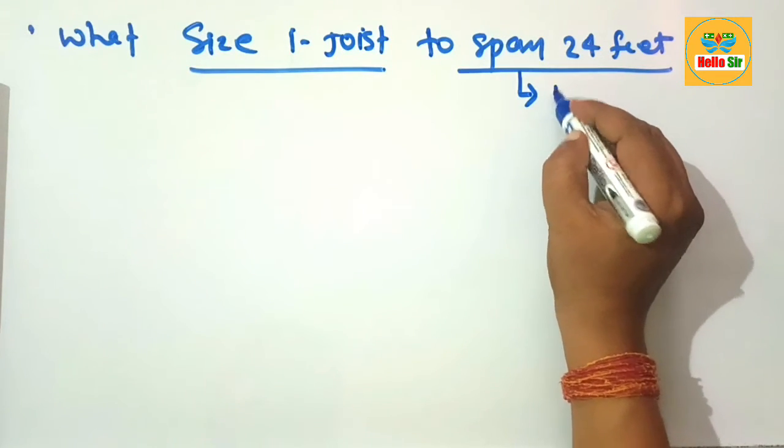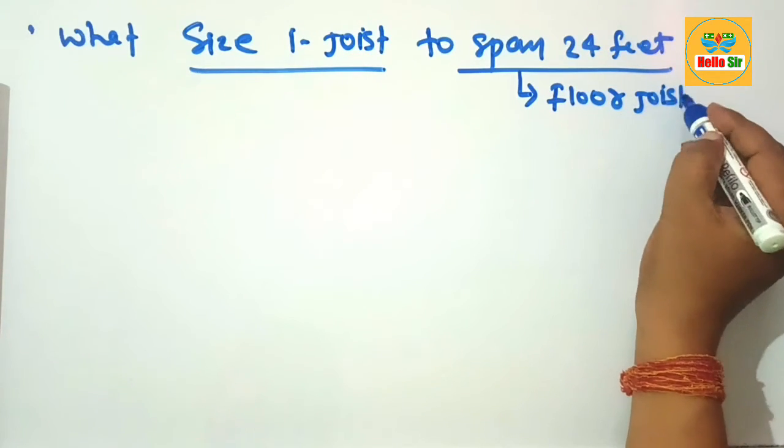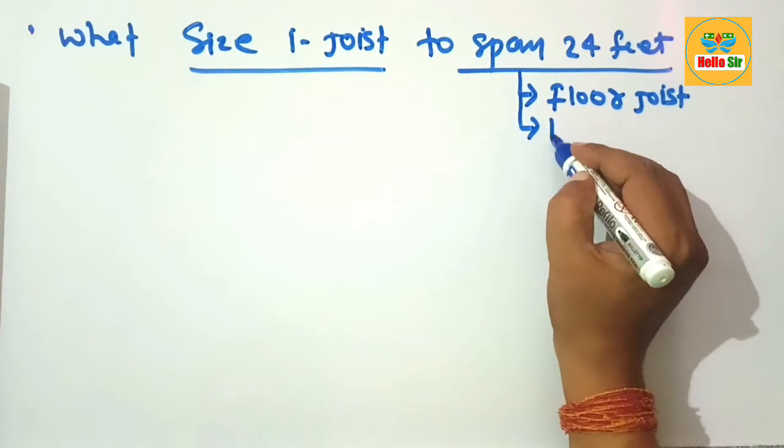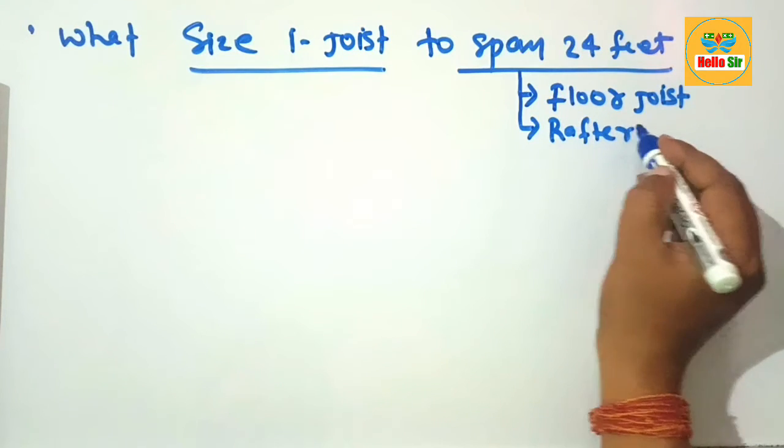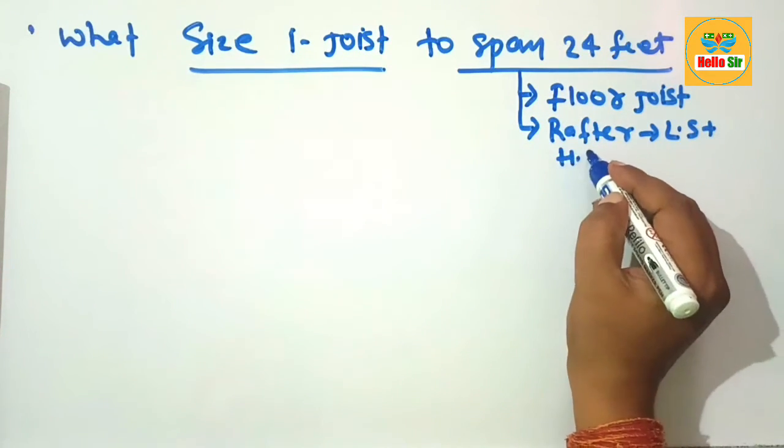The I-joist is used as a floor joist and it may be used as a rafter for longer spans and heavy load conditions.